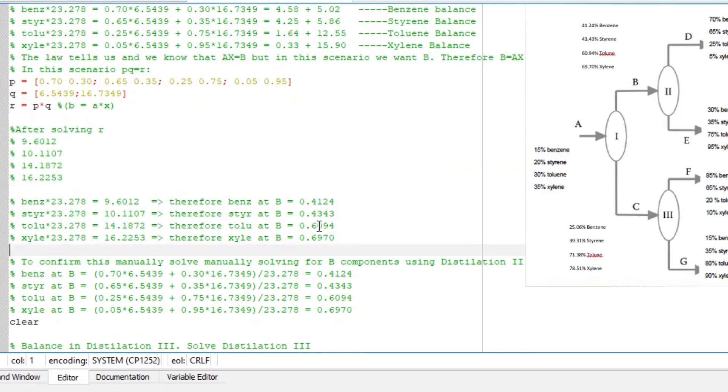We have 0.6094 moles of toluene in B, and we also have 0.6970 moles of xylene in B.